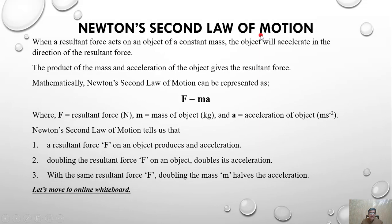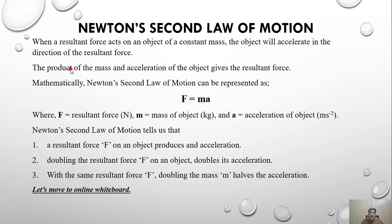Newton's second law of motion states that when a resultant force acts on an object of constant mass, the object will accelerate in the direction of the resultant force. If the resultant force is acting towards the right, the object will accelerate to the right. We can say the product of mass and acceleration gives you the resultant force.